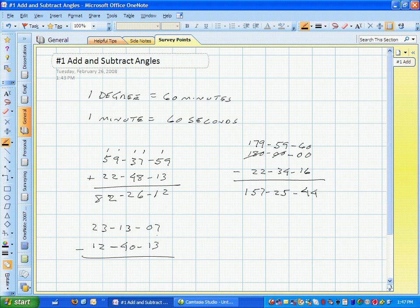Let's see, 7 seconds minus 13 seconds can't do it, so you need to borrow a minute. That's 12, that becomes 67, and so this is 54. 12 minus 40 can't do it, so you need to borrow. This becomes 72. That's 2, 3, 0, 1. So it's 10 degrees, 32 minutes, 54 seconds.